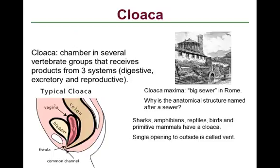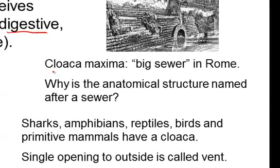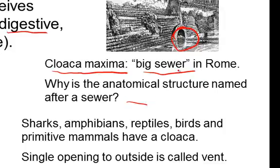A cloaca is a chamber that receives products from three systems: the digestive, the excretory, and the reproductive systems. This is different from the plumbing you're used to, which has a separate urogenital opening and a separate anal opening. The word 'cloaca' actually means sewer — the Cloaca Maxima in Rome was the big sewer. The cloaca contains urine, feces, and also gametes for reproduction.